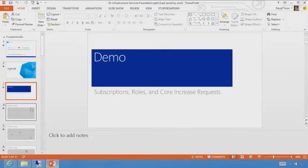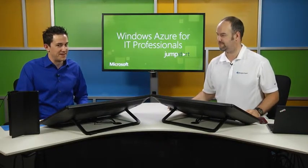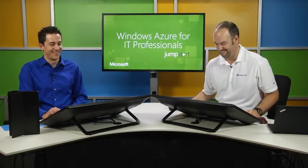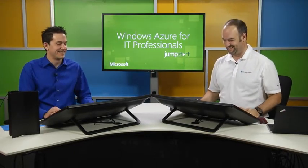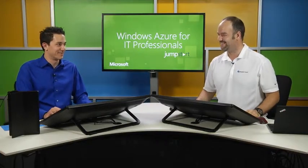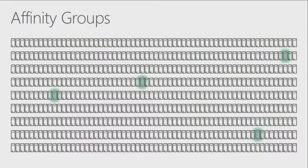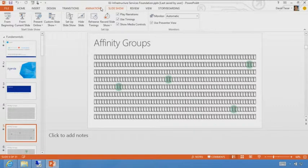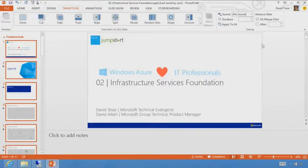Let's go back to the slides and talk about affinity groups. Windows Azure has resources in a number of different places, and affinity groups help you keep those resources together within the overall cloud fabric.